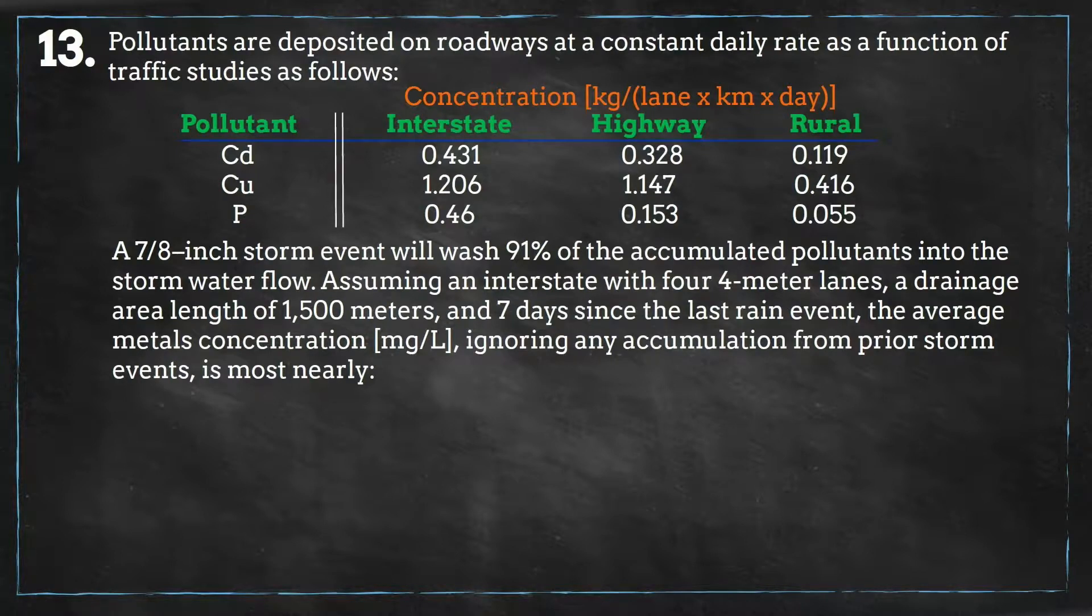Assuming an interstate with four 4-meter lanes, a drainage area length of 1500 meters, and seven days since the last rain event, the average metals concentration, ignoring any accumulation from prior storm events, is most nearly